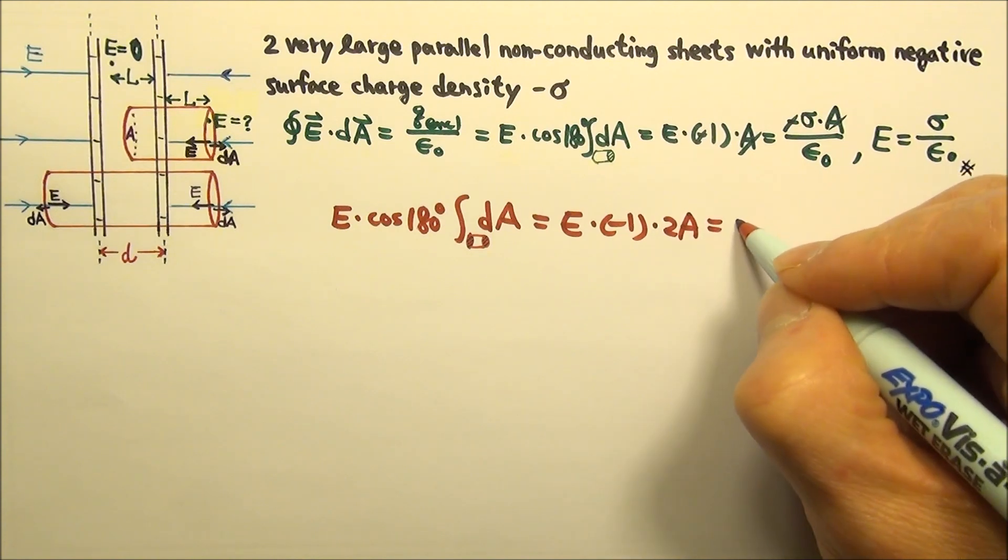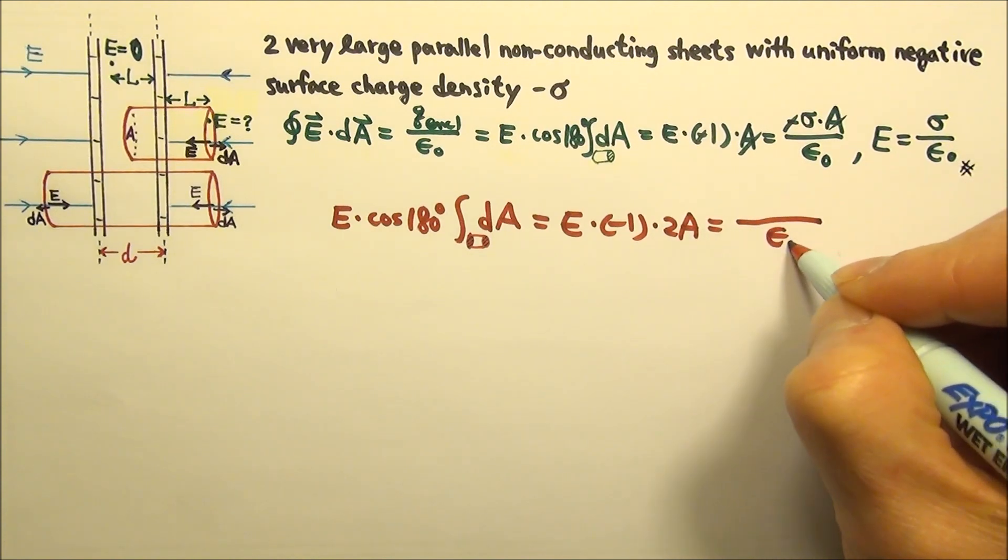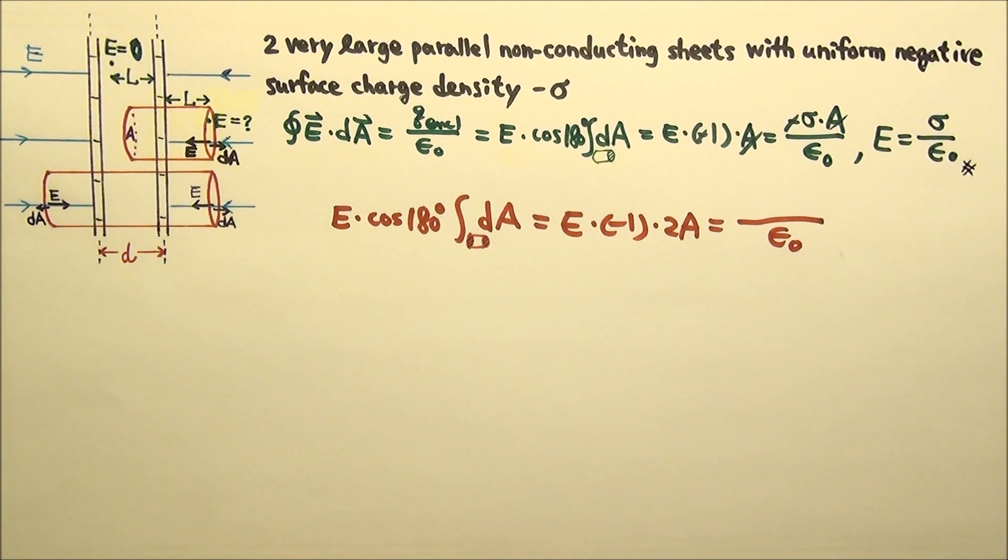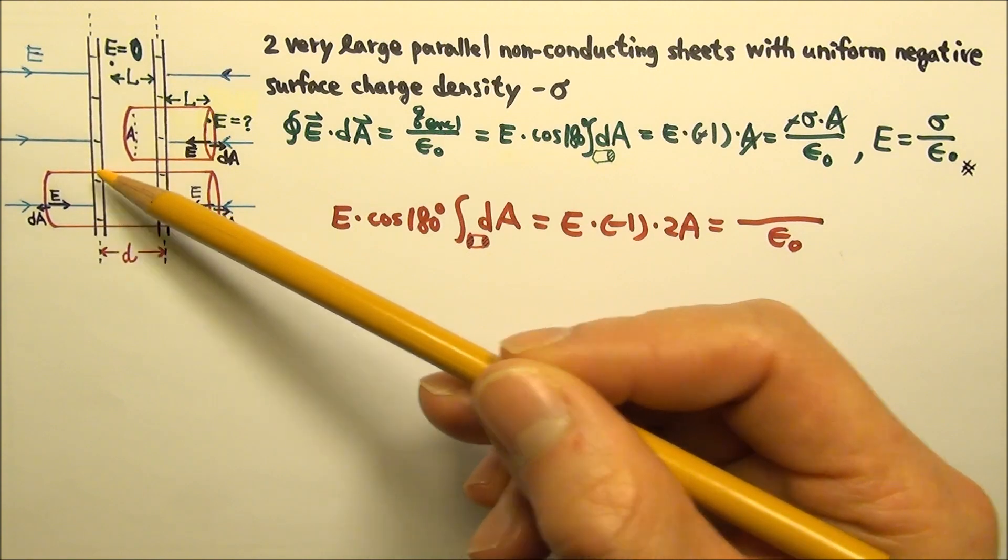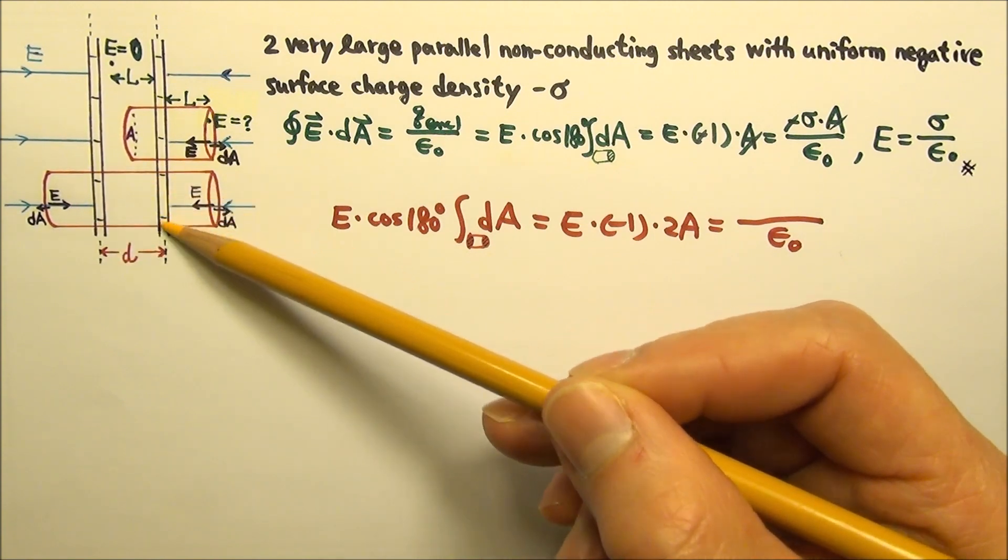And then this would equal to the q enclosed over epsilon naught. This time, the Gaussian surface encloses the charges on this sheet of charge and that sheet of charge.